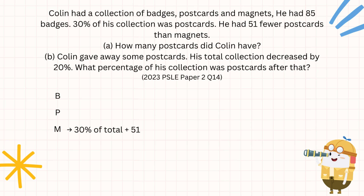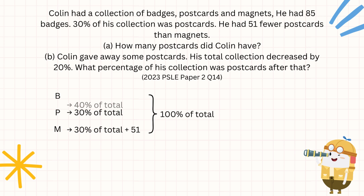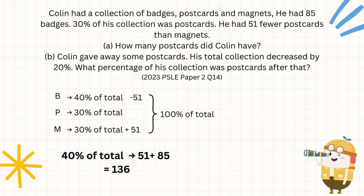In order to actually find out the number of badges, we need to take note: the total amongst all three items is supposed to represent 100% of the total. Badges itself would be 100% minus postcards and magnets, giving us 40%. Because we're balancing out to reach 100%, we need to factor in the 51. So 40% of total equals 51 plus the 85 given for badges, allowing us to determine 40% of total to be 136.